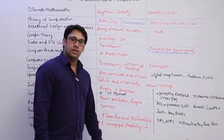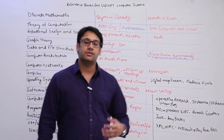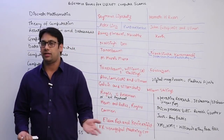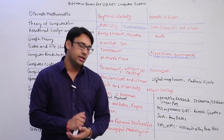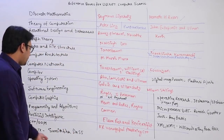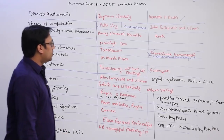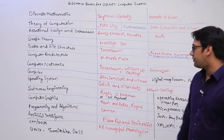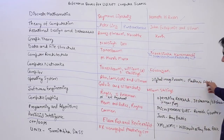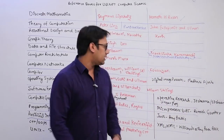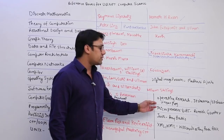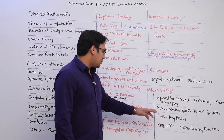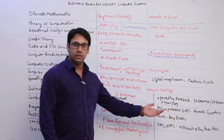For C++, you can refer KK Venugopal's 'Mastering C++' or any standard C++ book, because they are not asking very difficult questions from C++ — any standard book is more than enough. For UNIX, you can refer Sumitabha Das. For Digital Image Processing, which has very few book options, you can refer Madhuri H. Joshi, which is easy to understand because the language is also simple.